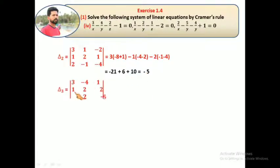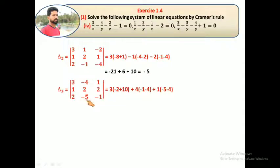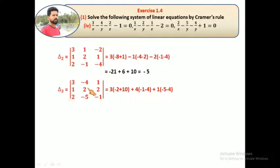Now for delta 3, we replace the third column with the constants and expand: 3 into (minus 2 plus 10) plus 4 into (minus 1 minus 4) plus 1 into (minus 5 minus 4). So delta 3 is minus 5.